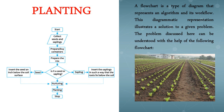The flowchart starts with collecting seeds and saplings, then prepare or buy the containers, then prepare the mixture. Next, you encounter a decision box: is it a seed or a sapling? If it is a seed, insert the seed one inch below the soil surface. If it is a sapling, insert it so that the roots lie below the soil. After making the decision, nurturing is done, followed by plantation, and then stop. So, bigger problems can be resolved into smaller ones with the help of two main components: algorithm and flowcharts.